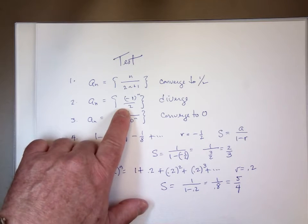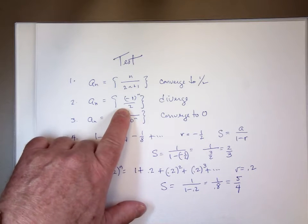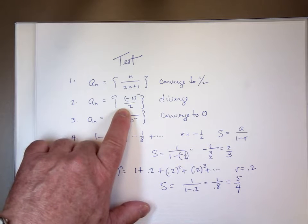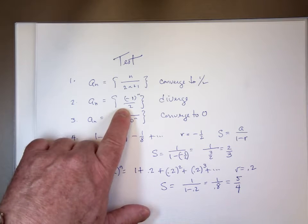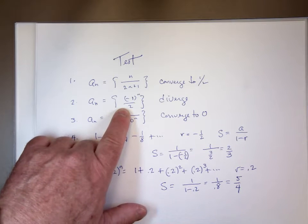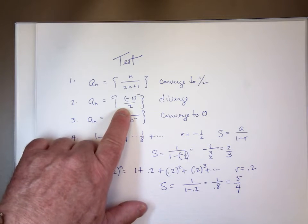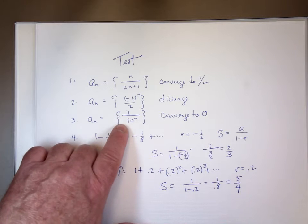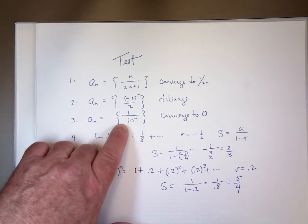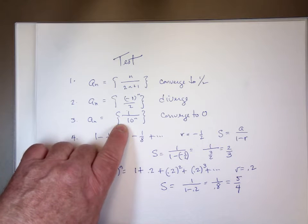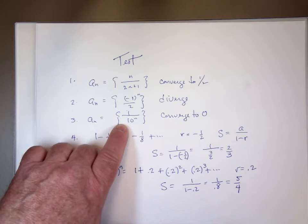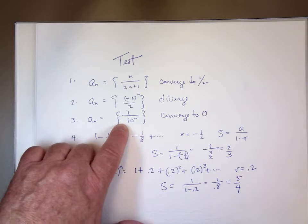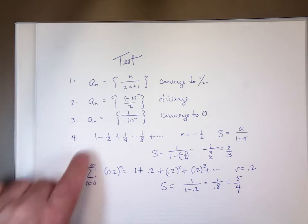This sequence, however, does not converge. It diverges because it goes negative one-half, positive one-half, negative one-half, positive one-half, and there is no limit. The third sequence converges to zero because as n goes to infinity, 1 over 10 to the n will clearly go to zero.